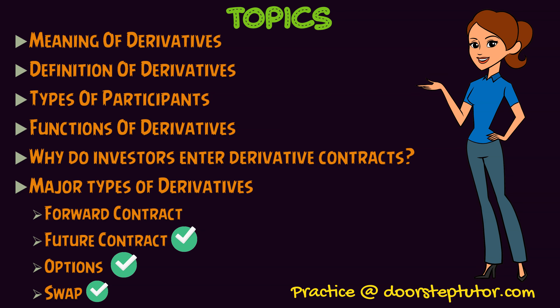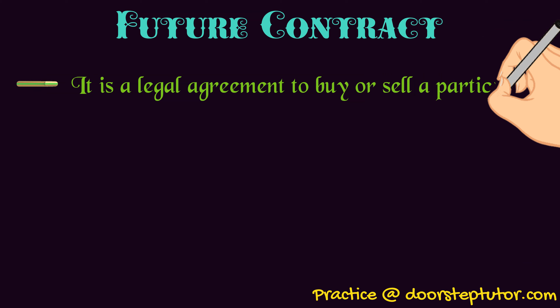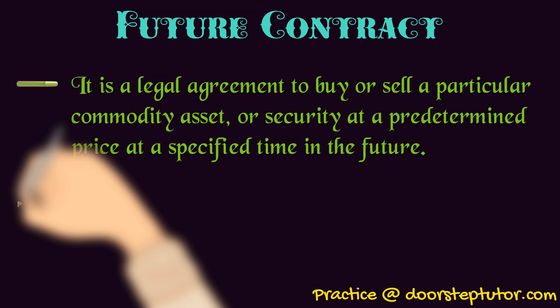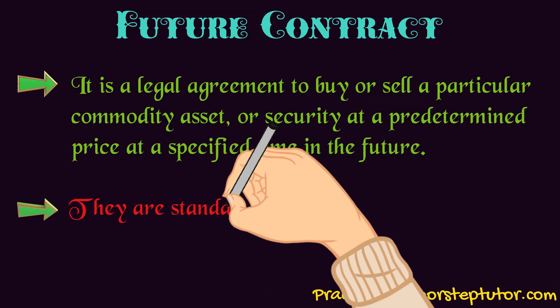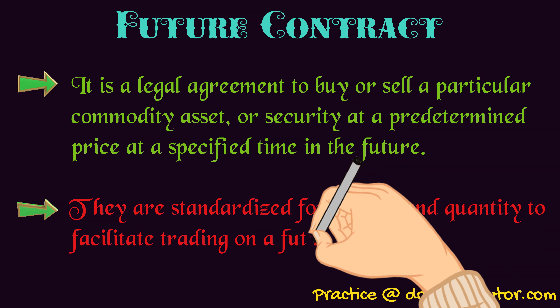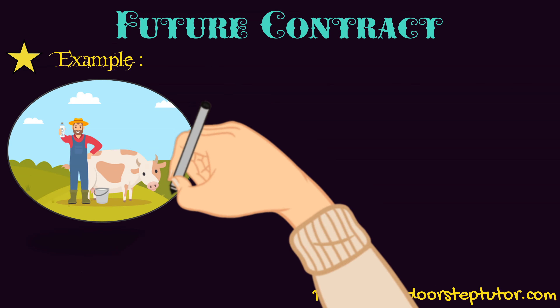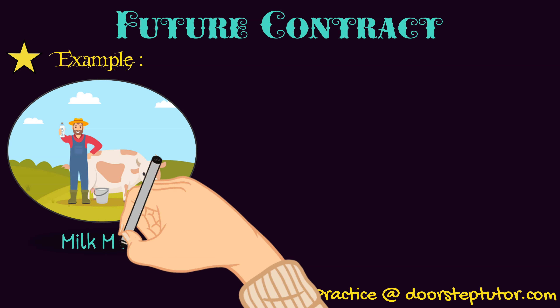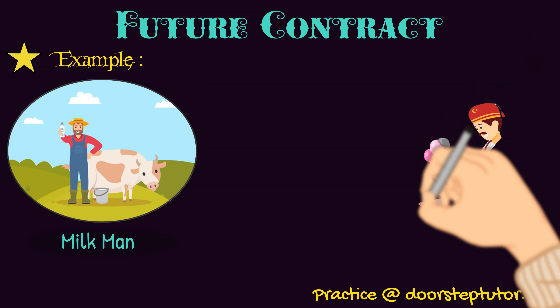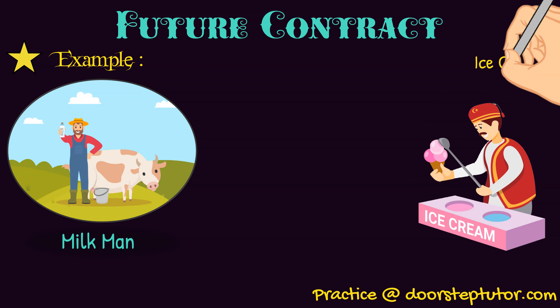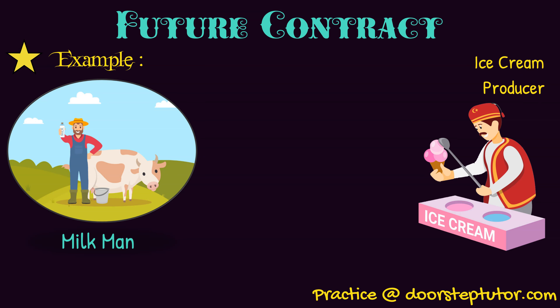A futures contract is a legal agreement to buy or sell a particular commodity asset or security at a predetermined price at a specified time in the future. For example, there is a milkman who sells milk to the ice cream producer for making ice cream, and the current market price of milk is Rs. 150 per gallon. That means the ice cream producer is purchasing milk at Rs. 150 per gallon.